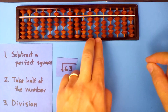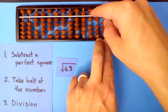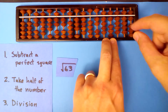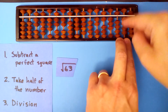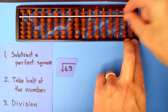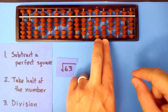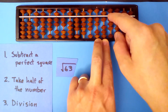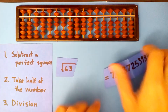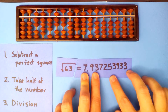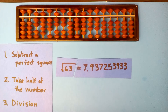7.9 into 74, 9 times. 9 times 7 is 63, 9 times 9 is 81, 9 times 3 is 27, 9 times 7 is 63, 9 times 2, 9 times 5, 9 times 3. 7.8 into 26, 3 times — let's stop there. So the square root of 63 is 7.937253933. Okay, try a bunch more. Hopefully it makes more sense now. Have fun and good luck.